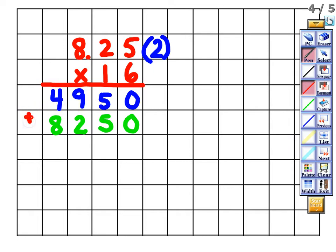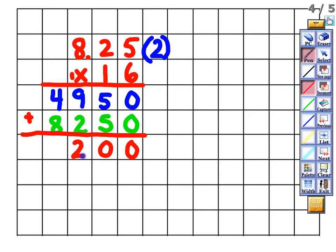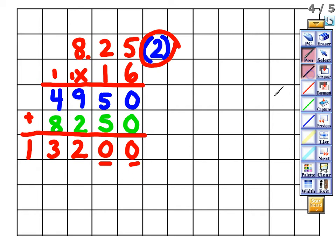Now add the two partial products carefully. Zero plus zero is zero, five plus five is ten — put zero carry one. One plus nine plus two is twelve — put two carry one. One plus four plus eight is thirteen. We have two digits to the right of the decimal in my problem, so we place the decimal two digits from the right, giving us 132.00.